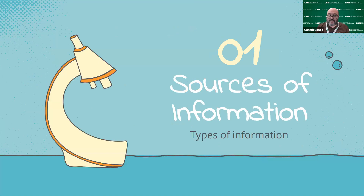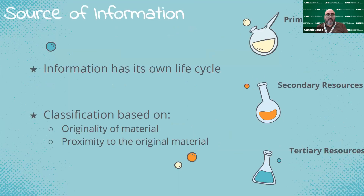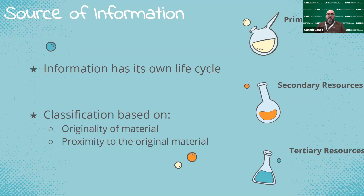First we'll talk about sources of information — types of information. Some of these terms you're probably familiar with, but it's good to go over them again. Information has its own life cycle: it goes through different processes from when it originates, who then reports on it, and all those things. How close someone is to the original material is one of the most important parts in your evaluation of sources.